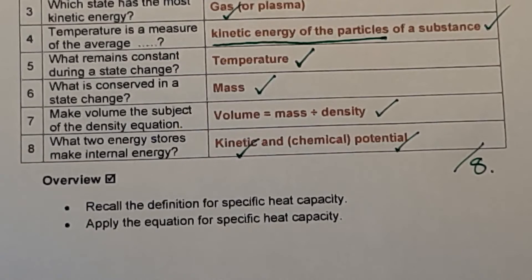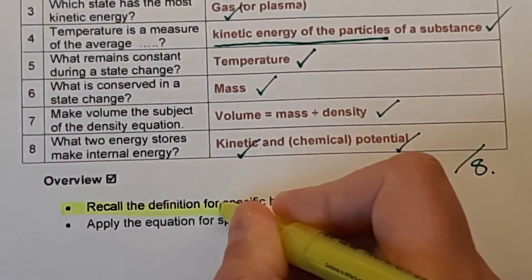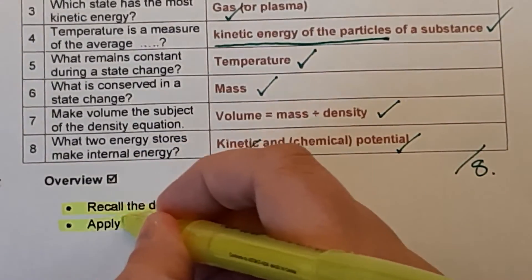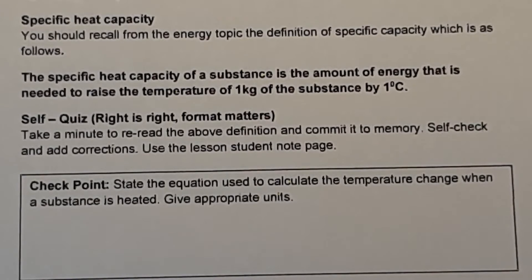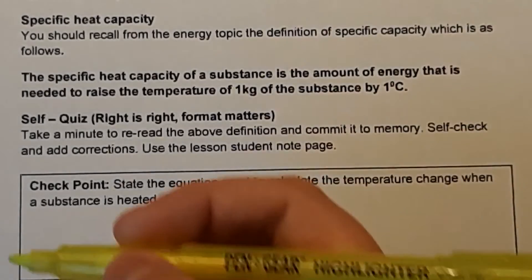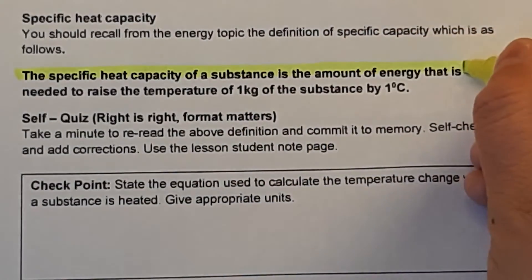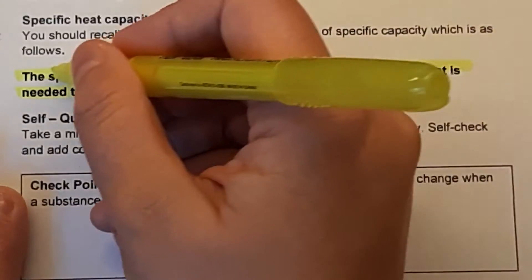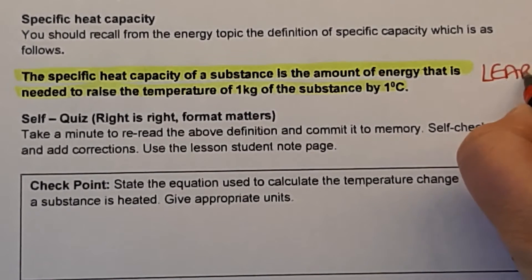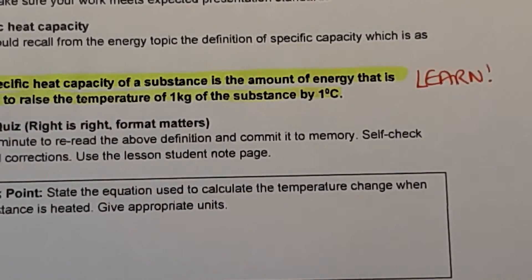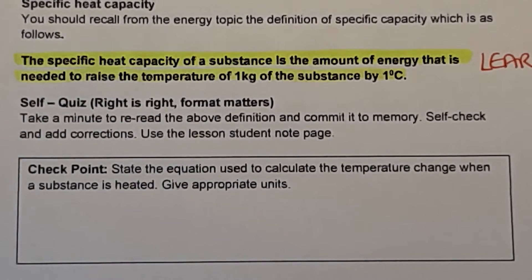Today's learning plan: by the end of the lesson, you should be able to recall the definition for specific heat capacity and apply the equation for specific heat capacity. Moving on to page nine — the definition of specific heat capacity is the amount of energy needed to raise the temperature of one kilogram of the substance by one degree Celsius. You need to learn that definition, so pause the video and take a minute or two to do that now.